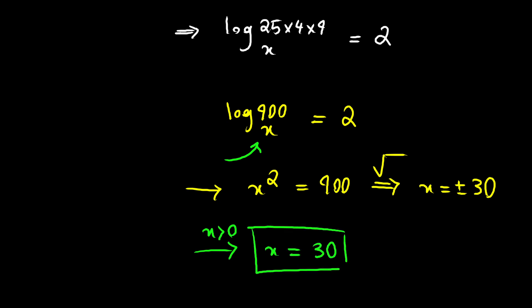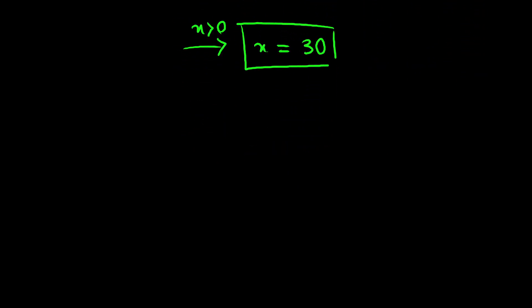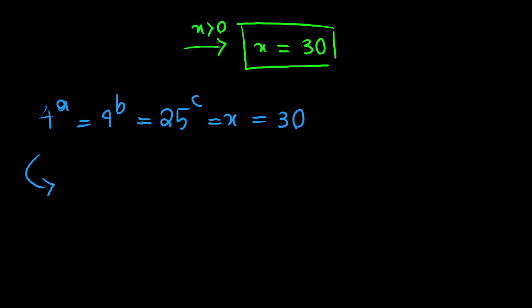Let's recap. We know that 4 to the power of a equals 9 to the power of b equals 25 to the power of c, and all of these equal x, where x equals 30. Now we need to use this to evaluate 64 to the power of a plus 81 to the power of b plus 25 to the power of c.